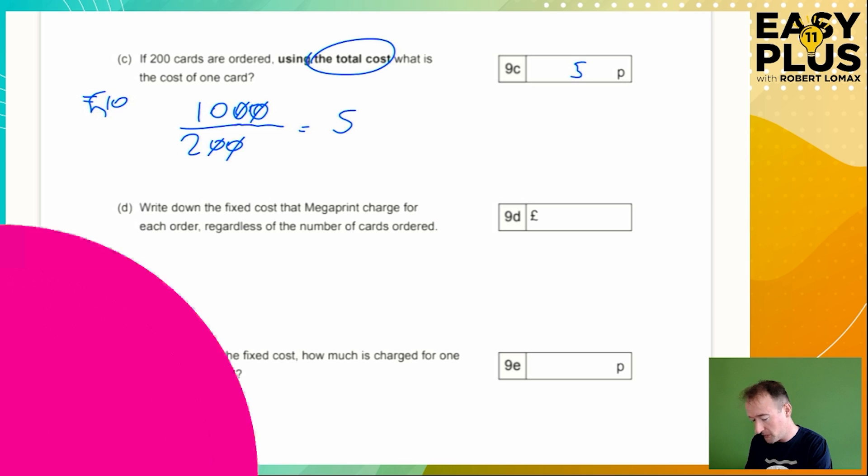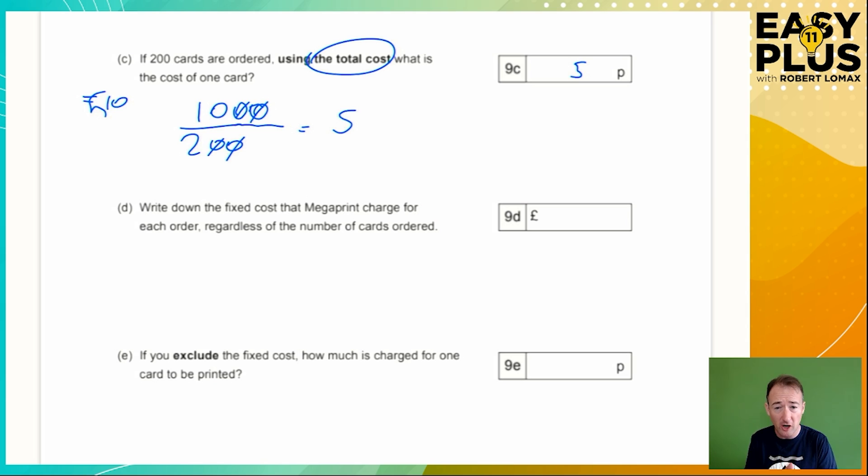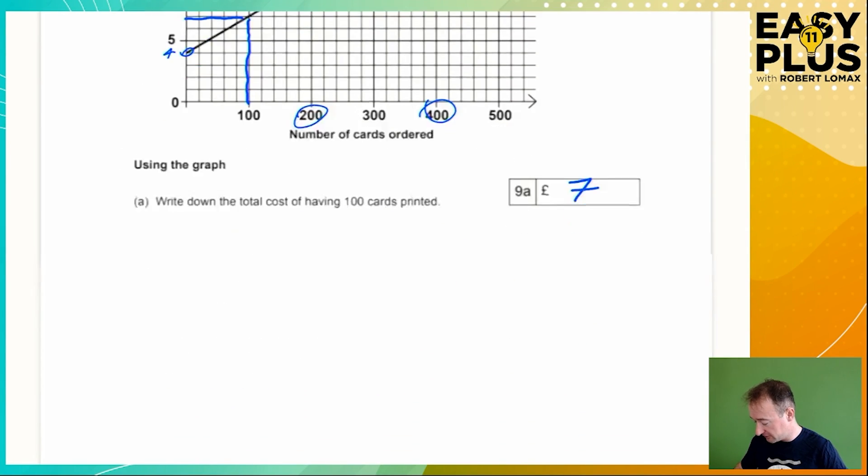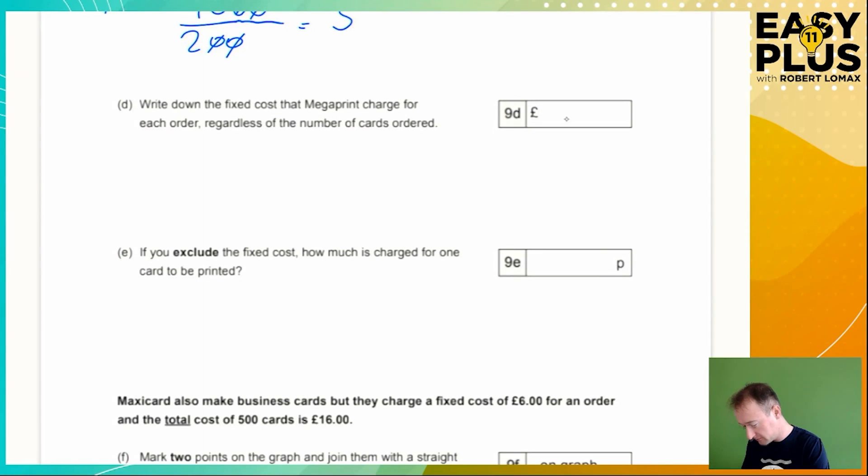Write down the fixed cost that Megaprint charge for each order, regardless of the number of cards ordered. So if you buy one card or if you buy one million cards, you still have to pay this fixed cost. Let's have a look at the chart. If we imagine buying a really small number of cards down here somewhere, you can see that it ends up at the £4 mark. So they start by charging you £4, and then they charge you a bit extra for every further card that you order. Even if you order zero cards, you still have to pay £4. So the fixed cost is £4. By the way, when you get a phrase like write down, that's an indication that you just need to find the answer and stick it in the answer space.